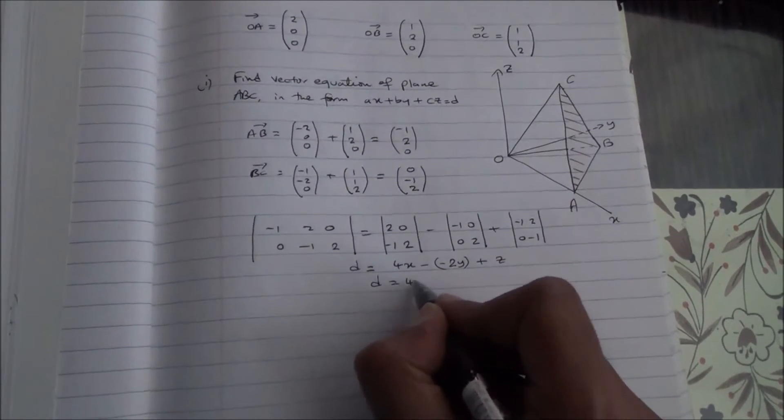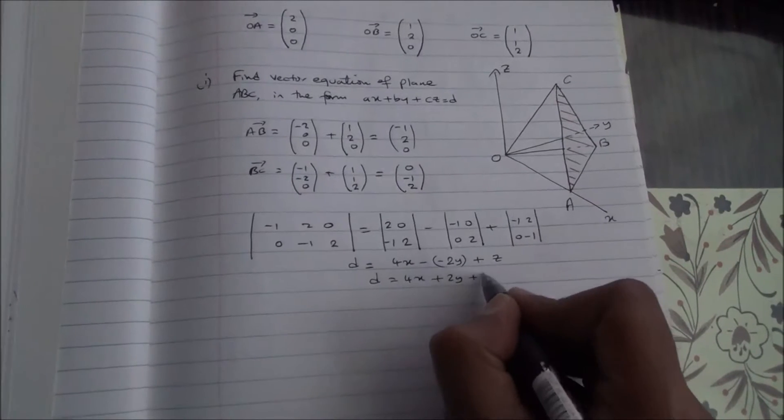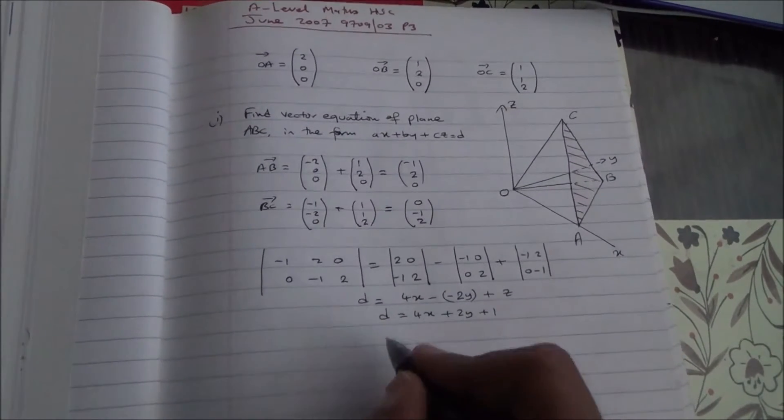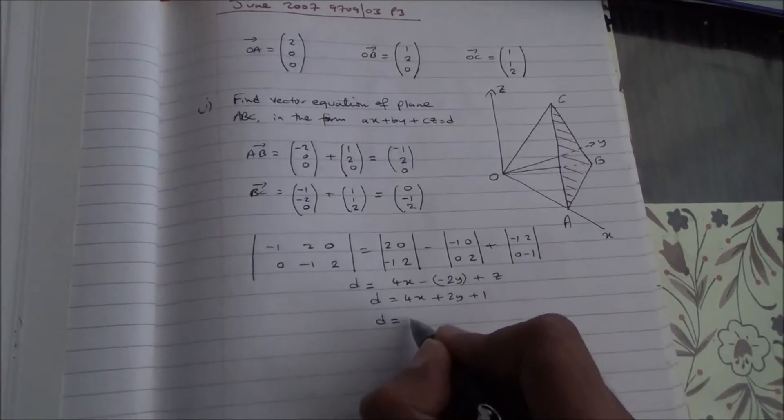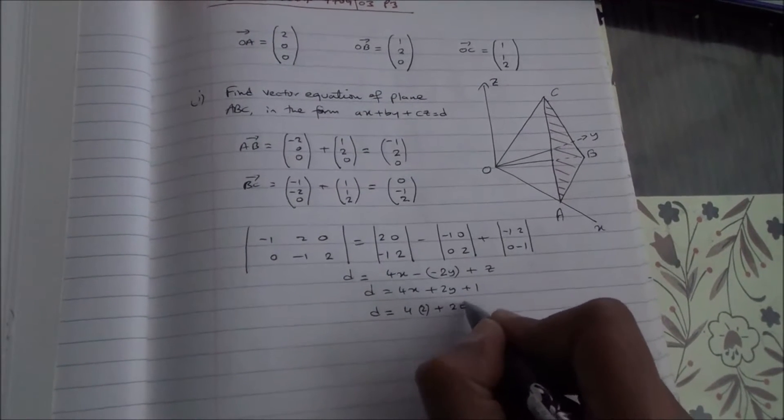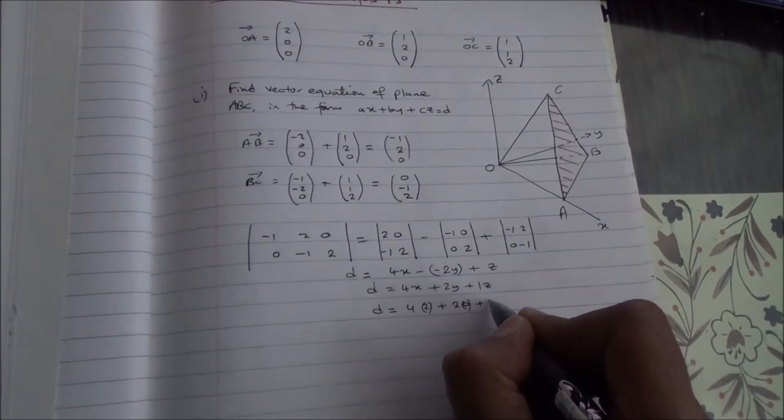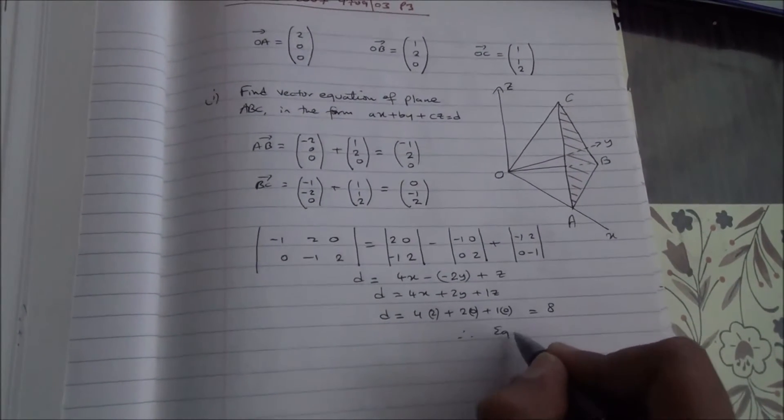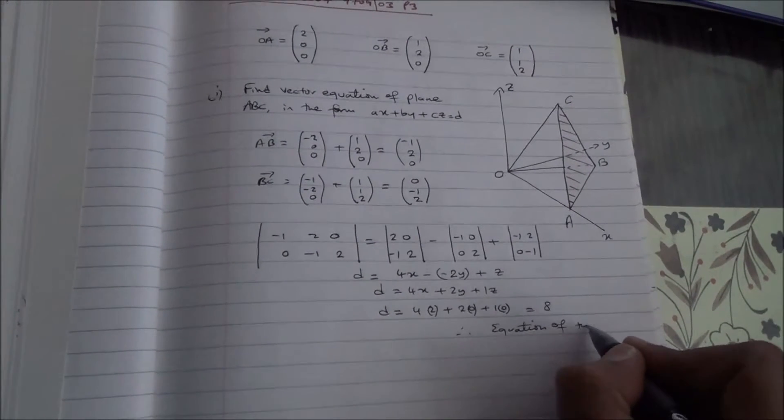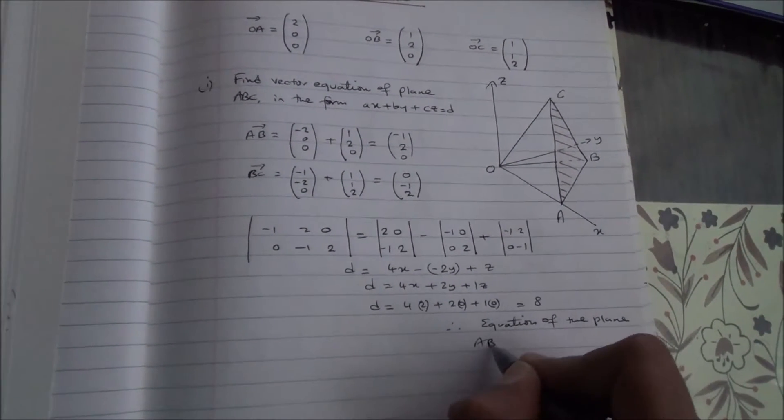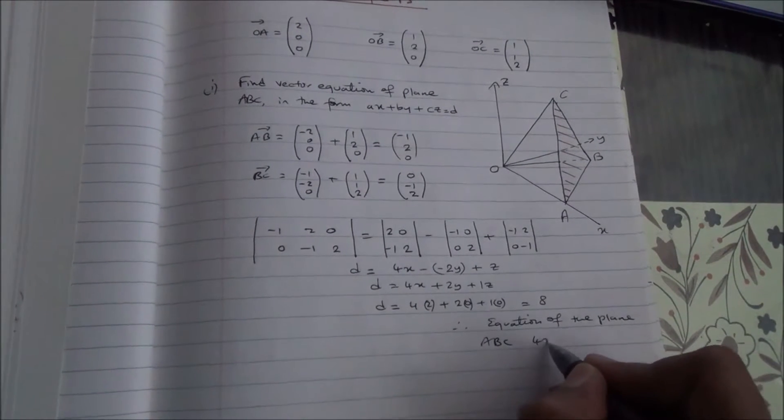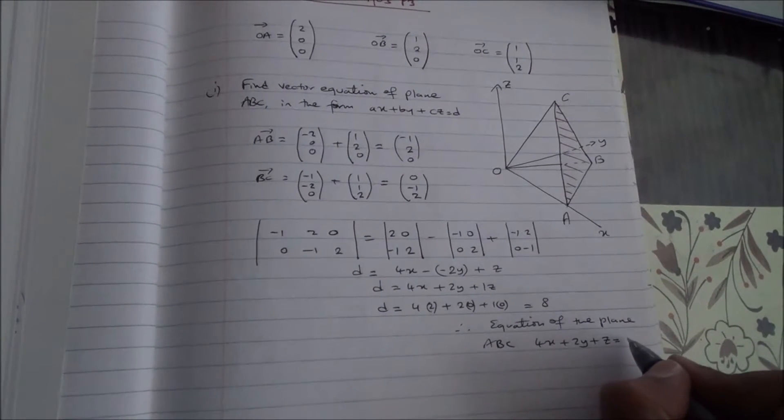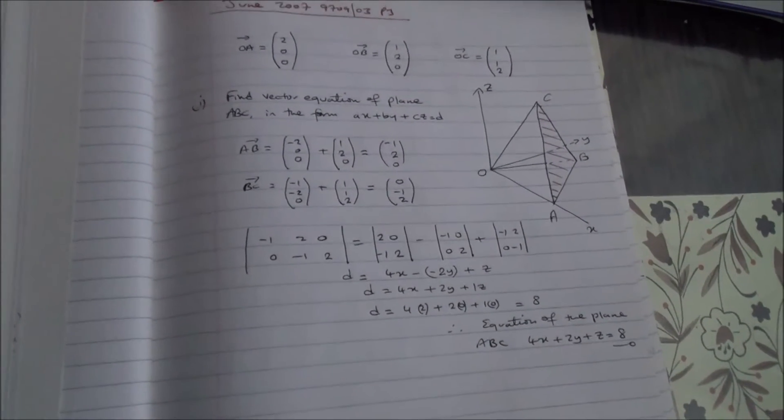So, d is going to be equal to 4x plus 2y plus 1. And, we can substitute A in here, so we've got d is equal to 4 times 2 plus 2 times 0 plus 1 times 0, and that's going to give us 8. Therefore, the equation of the plane ABC can be given as 4x plus 2y plus z is equal to 8. Here we are for the first part of the question.